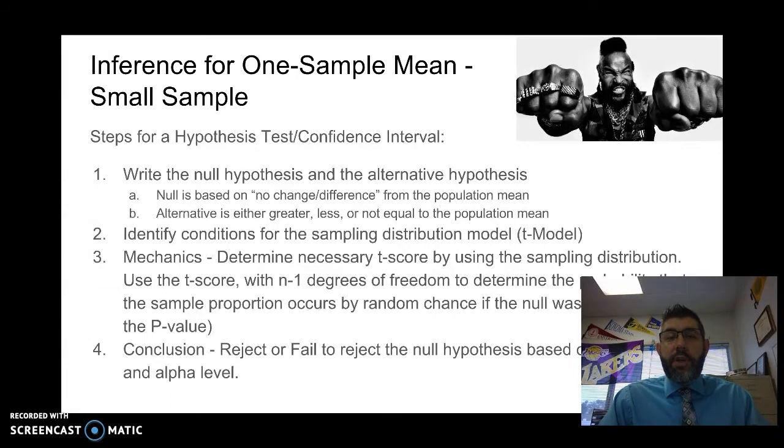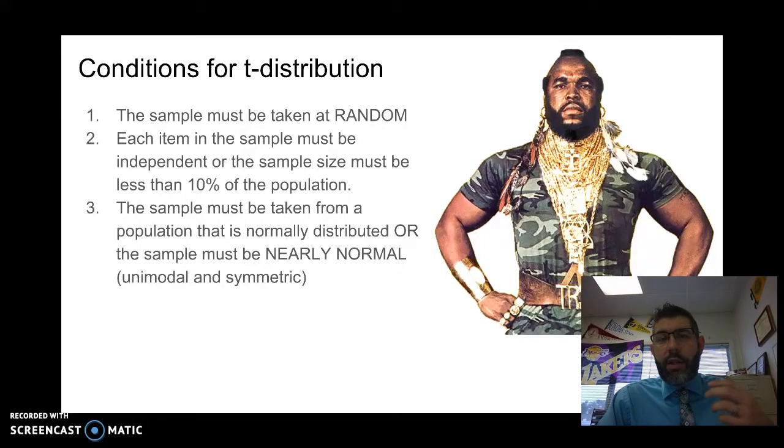So, if you're doing this for an AP stats class, make sure that you draw the histogram or you draw a dot plot for that third condition to show that the data that you got in your sample were unimodal and symmetric. All right, then we'll write our conclusion. So, these, again, are the conditions for the t-distribution. You can pause this, write it down, and we'll continue.